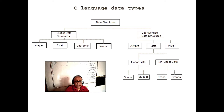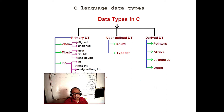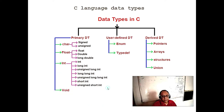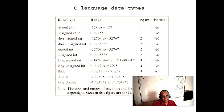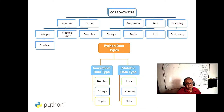We do not have pointers here. Pointers are the source of all the problems with C. In Python, the main strength lies in immutable data types — unlike C, which only has mutable data types.